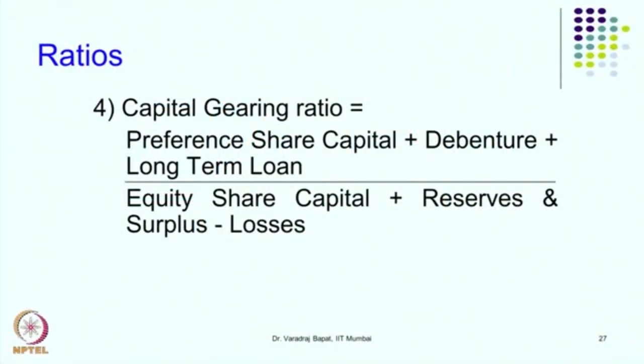Another important ratio is the capital gearing ratio, which is very similar to the debt-equity ratio. In the numerator we consider preference capital plus debt, and in the denominator we place the owner's fund — equity capital plus reserves minus any possible losses. A higher ratio indicates the company or project is considered more risky. A balance is needed; too high a ratio is to be avoided.